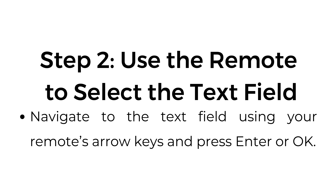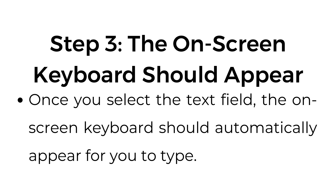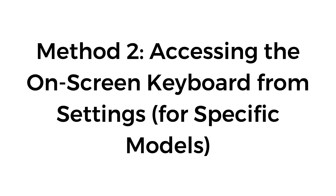Step number two, use the remote to select the text field — navigate to the text field using your remote's arrow keys and press enter or okay. Step number three, the on-screen keyboard should appear — once you select the text field, the on-screen keyboard should automatically appear for you to type.